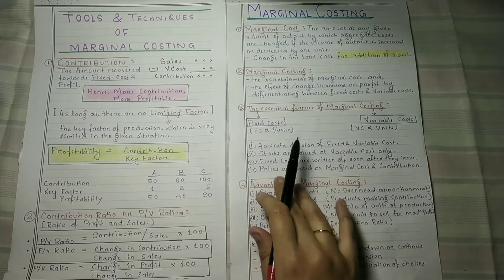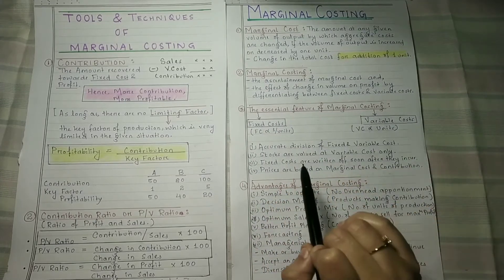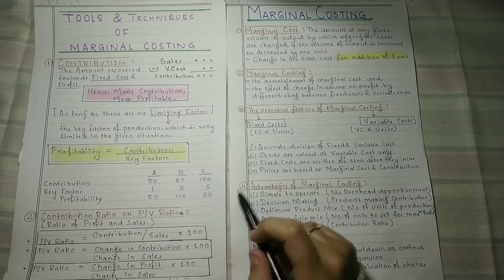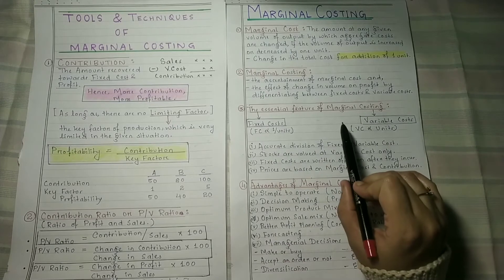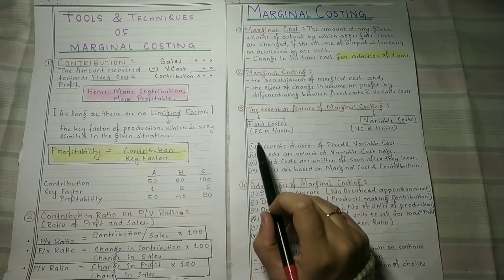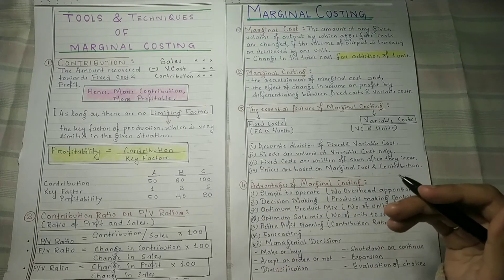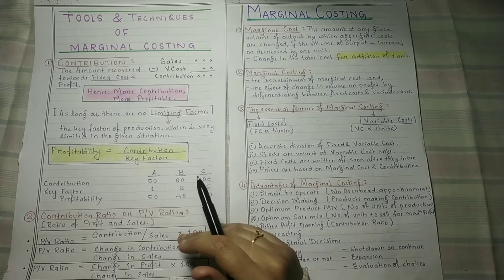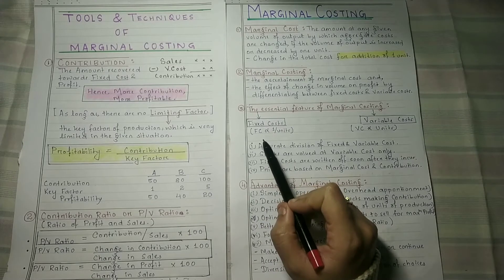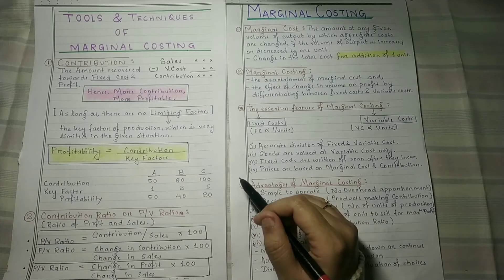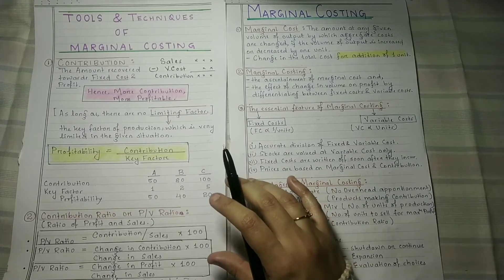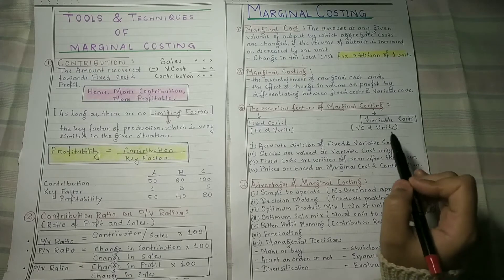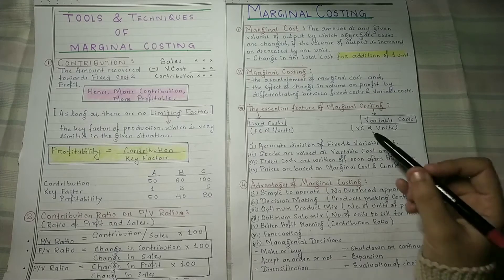The essential feature of marginal costing is that we ignore fixed cost. Total cost is made up of fixed cost and variable cost. Fixed cost remains the same regardless of the volume of production — for example, depreciation on machinery or rent does not change with output. But variable cost is directly proportional to units produced — if our volume of production increases, our variable cost also increases proportionately.